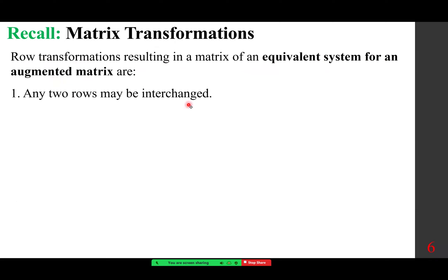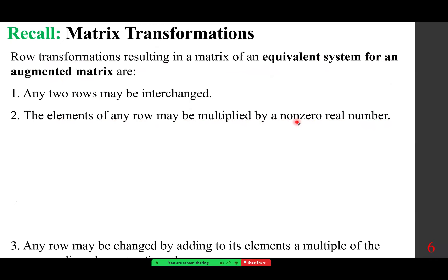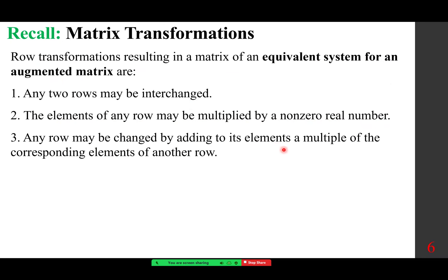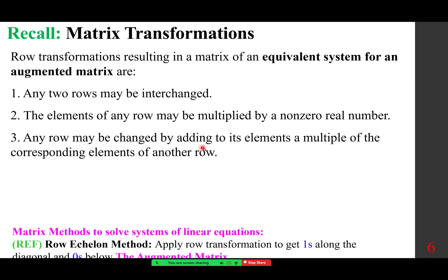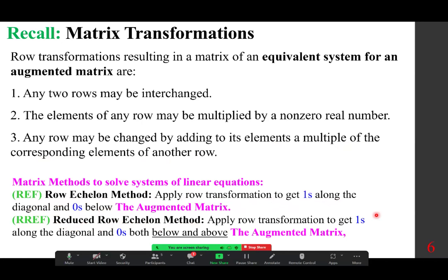Matrix row transformations: any two rows may be interchanged, meaning you are interchanging equations. The elements of any row may be multiplied by a non-zero real number — both sides of one equation multiplied by anything, as long as it's not zero. Any row may be changed by adding to its elements a multiple of the corresponding elements of another row — this is the concept of elimination. REF (row echelon form): apply row transformations to get ones along the diagonal and zeros below. RREF (reduced row echelon form): get ones along the diagonal and zeros both below and above.